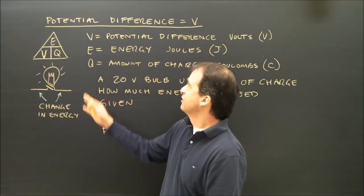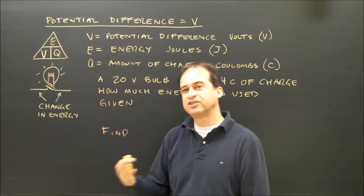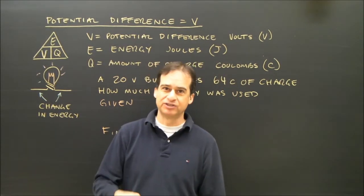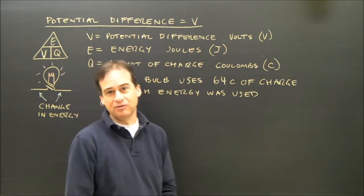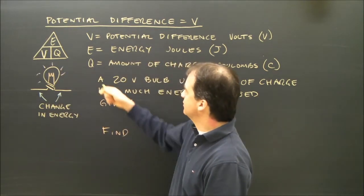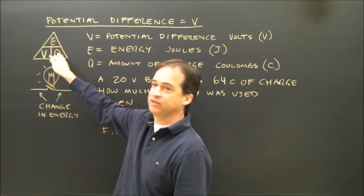This electricity formula is the one for potential difference. Potential difference is often called voltage, named after the units which happen to be volts.